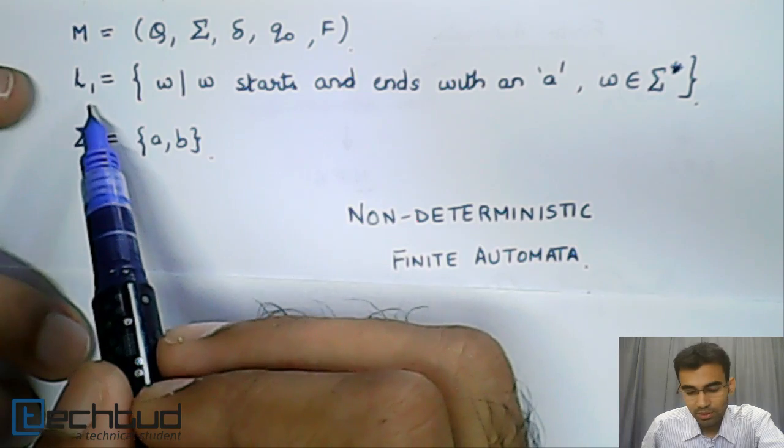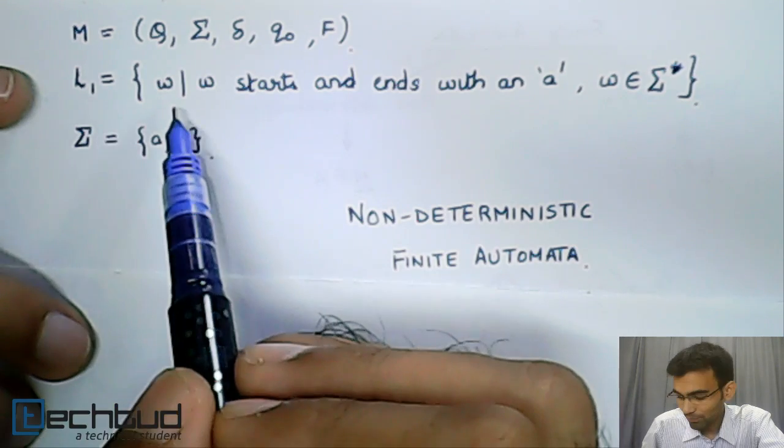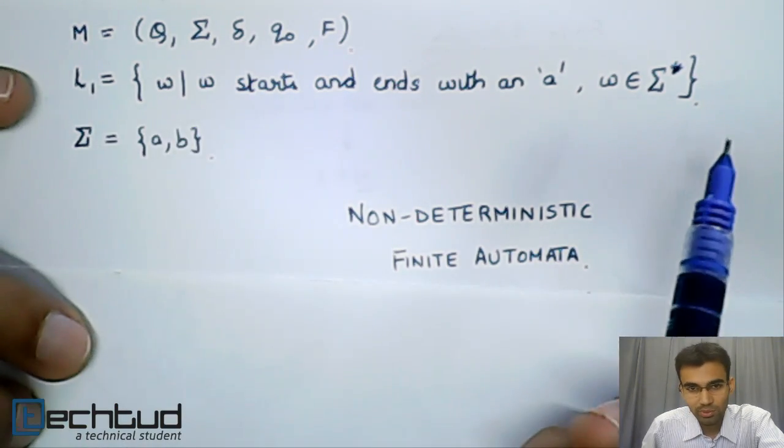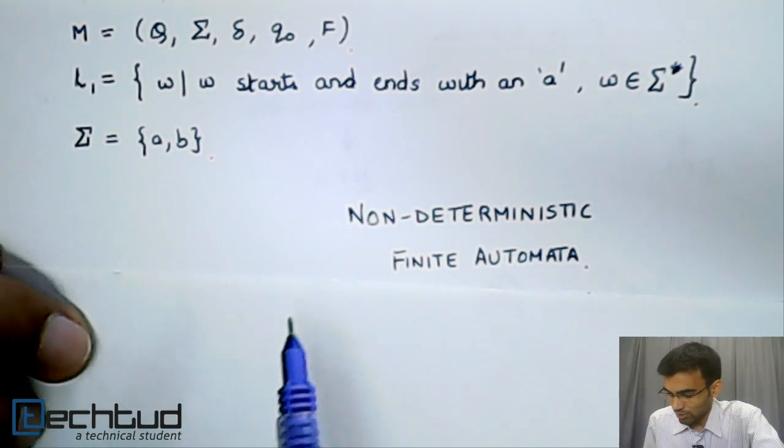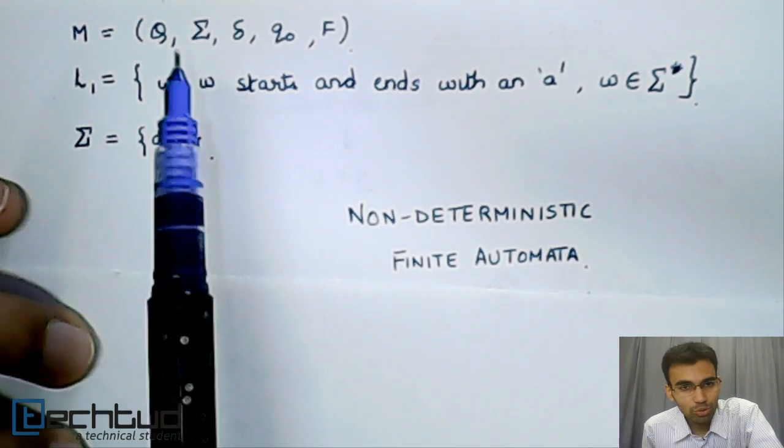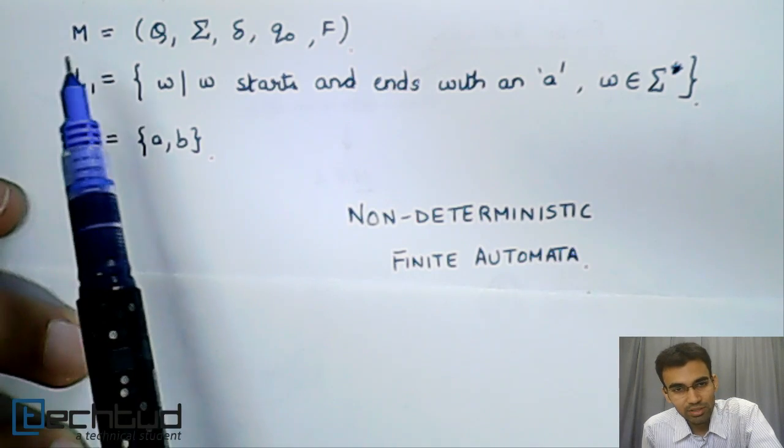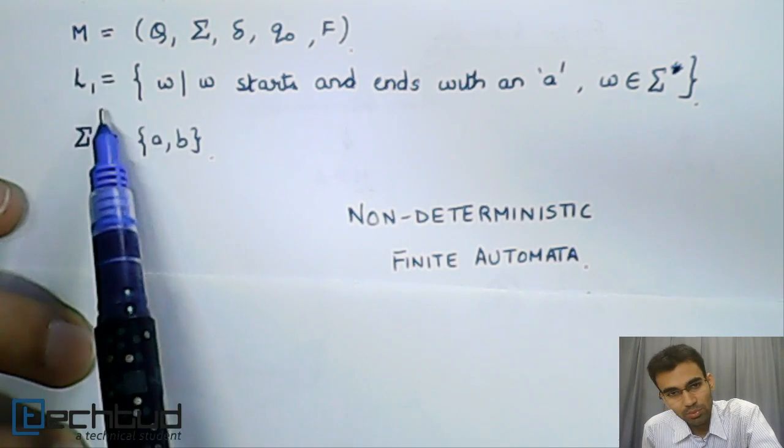We saw an example for the language L1, consisting of words starting and ending with an A, over the alphabet sigma AB. We learned how to draw a deterministic finite automata for this particular language.